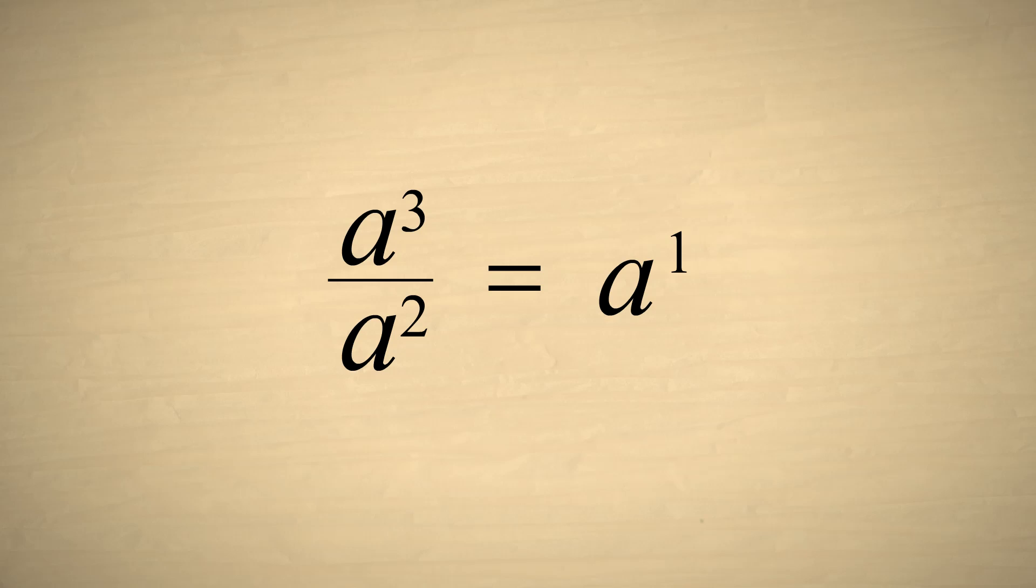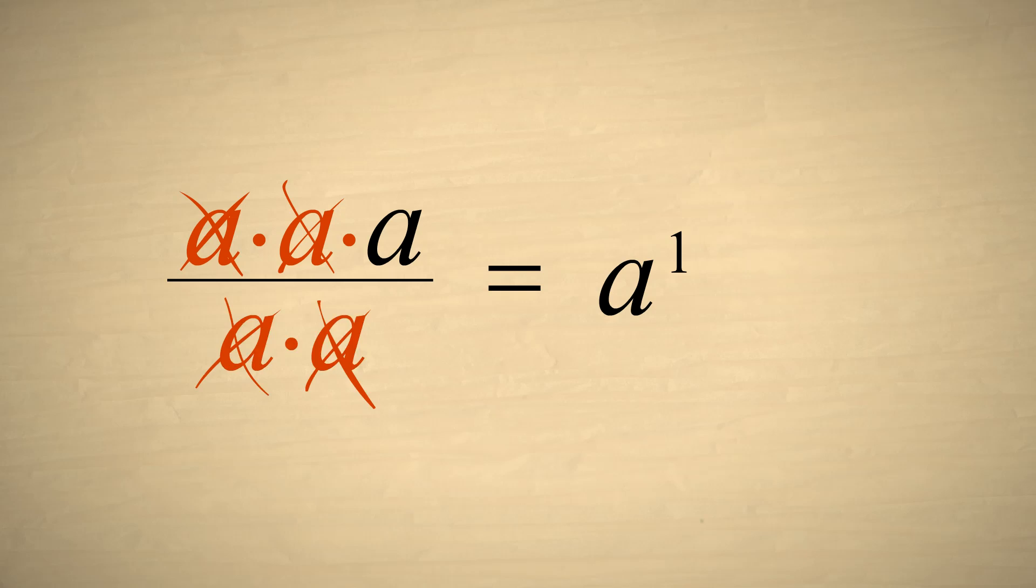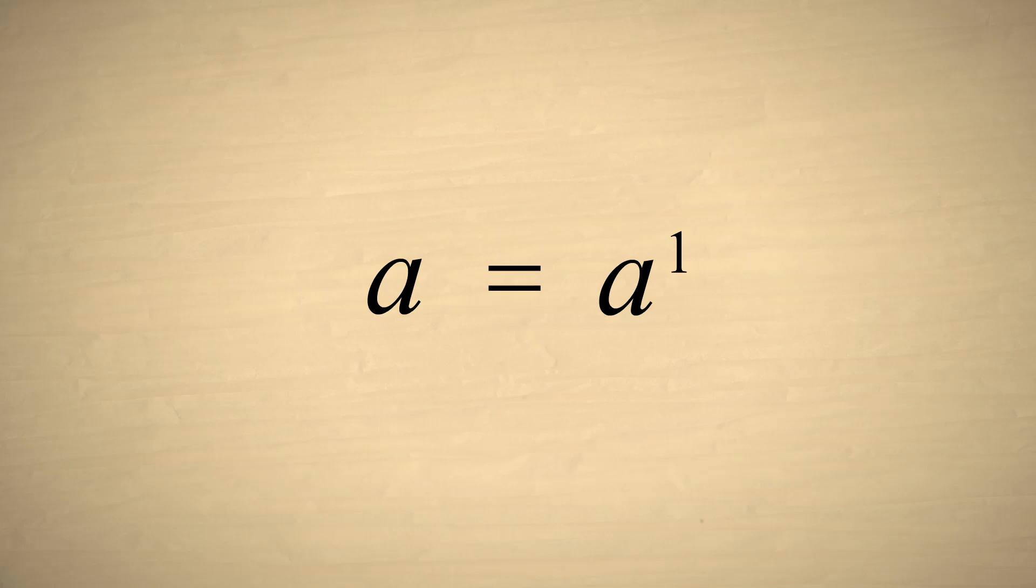We know that a number cubed is equivalent to three copies of that number multiplied together, and a number squared is equivalent to two copies multiplied. We can simplify this fraction by cancelling out two copies of the number in the numerator and two copies in the denominator, which leaves us with one copy of the number. So any number raised to the first power is the same as the number itself.